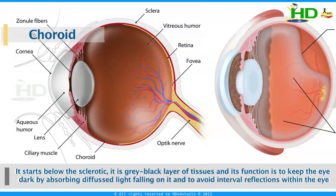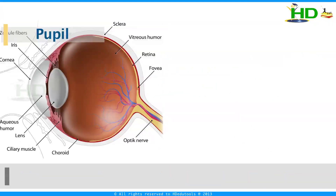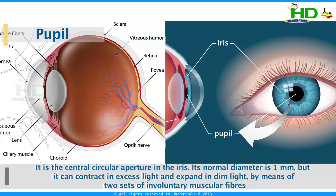The next part is the iris — it is a dark muscular diaphragm that controls the light level inside the eye. The pupil is the central circular aperture in the iris. Its normal diameter is 1 mm, but it can contract in excess light and expand in dim light by means of two sets of involuntary muscular fibers.